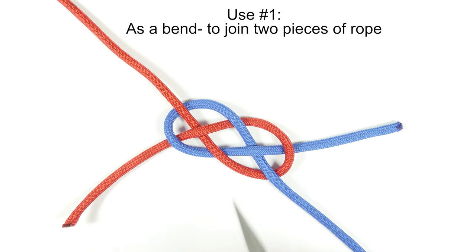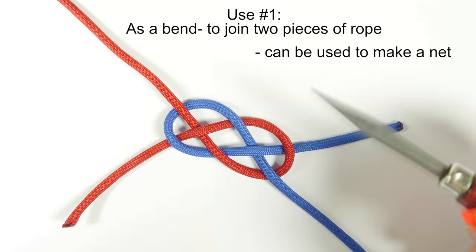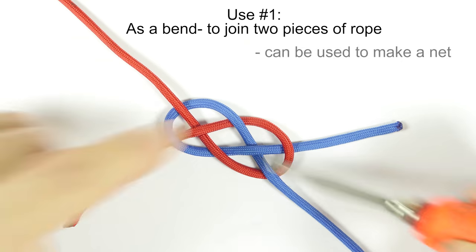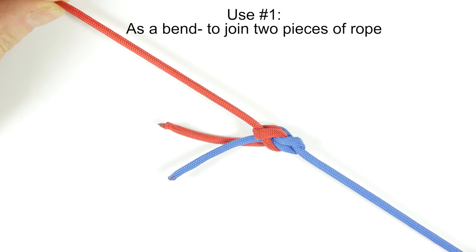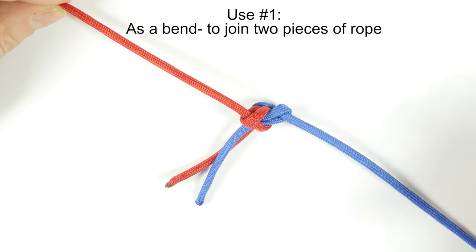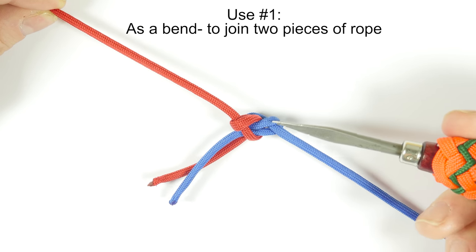When you join two pieces of rope using the Carrick Bend, you are going to get a nice shape like this. So it basically looks like a small mat. But when you put some strain onto the ends, the form is going to get distorted. Something like this. It still holds the two pieces of rope together, but it loses its form.